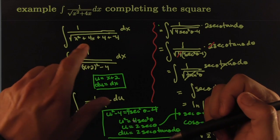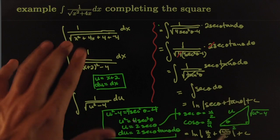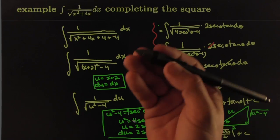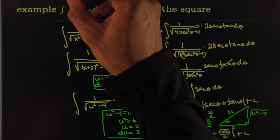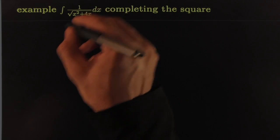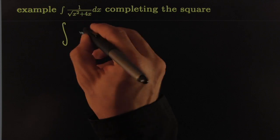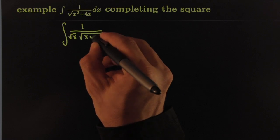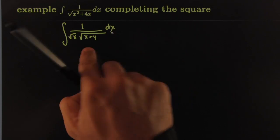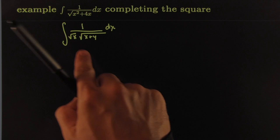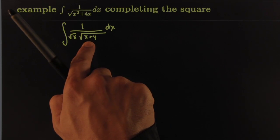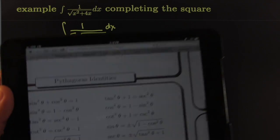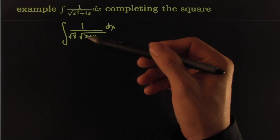That's the standard way — completing the square to eliminate the linear term is a very common technique. But there's something nicer I want to show you. The other brilliant idea is to write the expression as √x · √(x + 4) right from the start, and try to turn that into a monomial using a trig identity before completing the square at all.